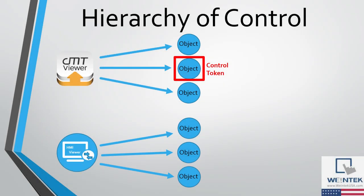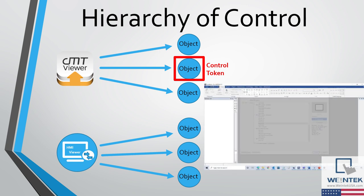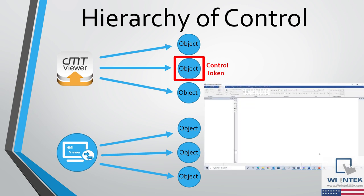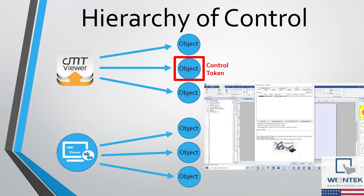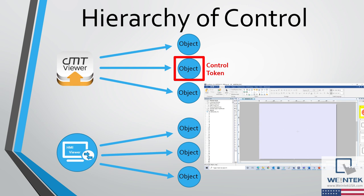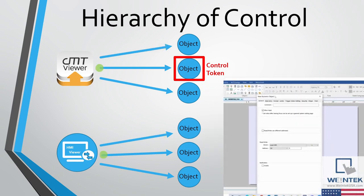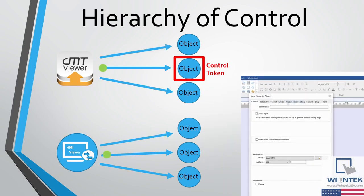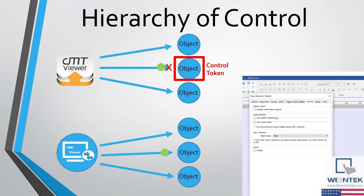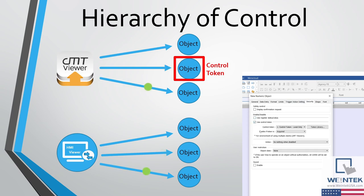However, unlike CMT Viewer, HMI Viewer does not have a way of establishing a hierarchy of control. Whereas CMT projects can use control tokens to determine what objects can be controlled by those connecting through CMT Viewer, HMI Viewer cannot. Therefore, users will have to be careful not to put the operator at risk when connecting to an HMI.